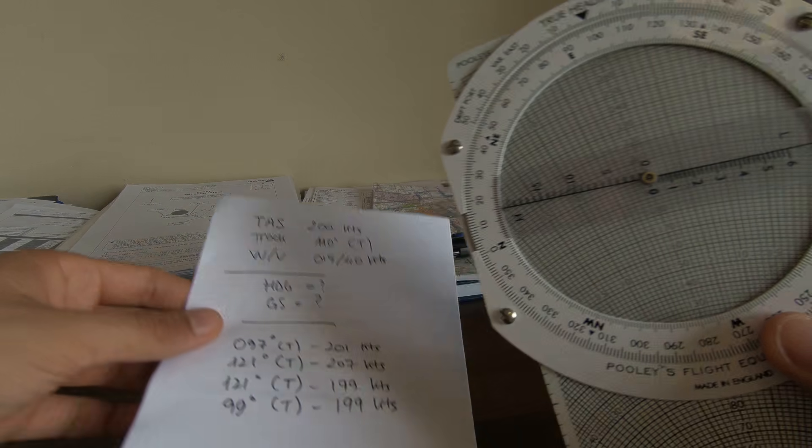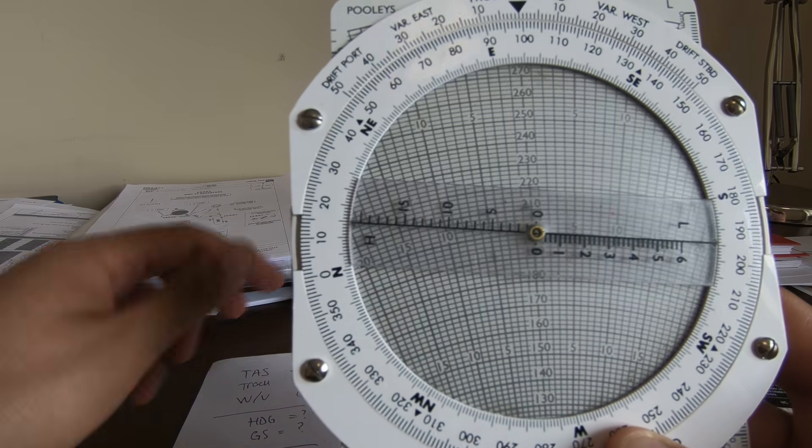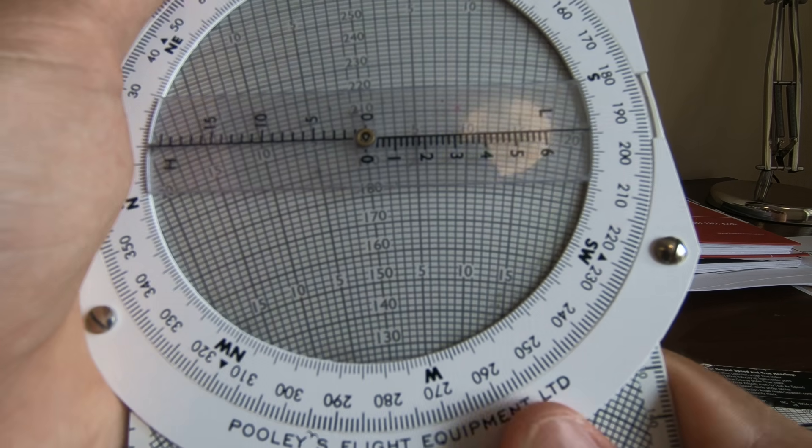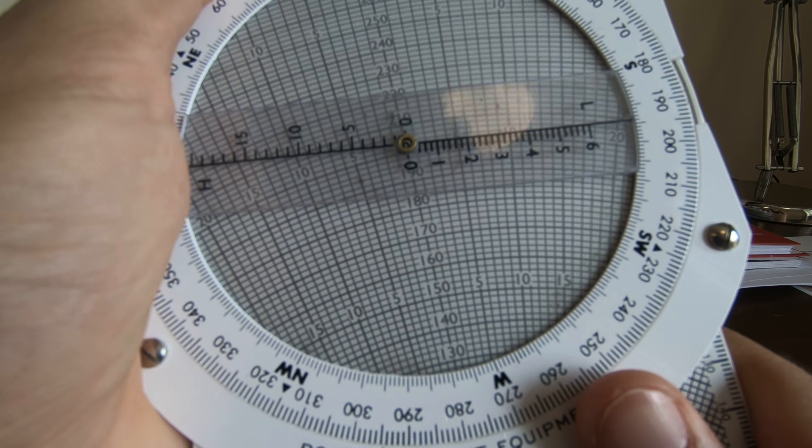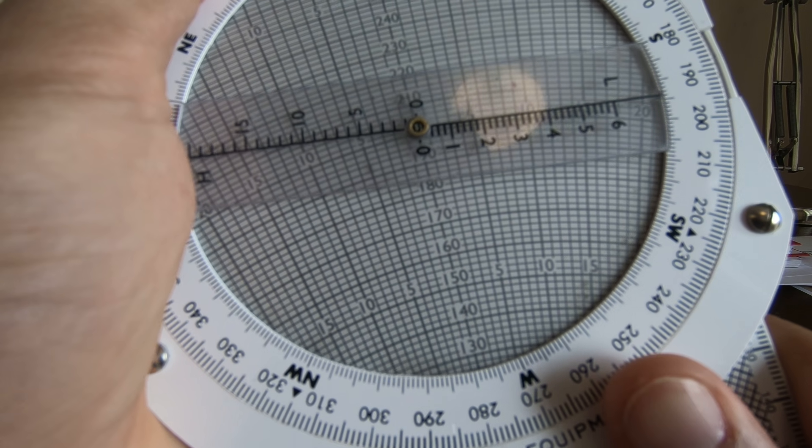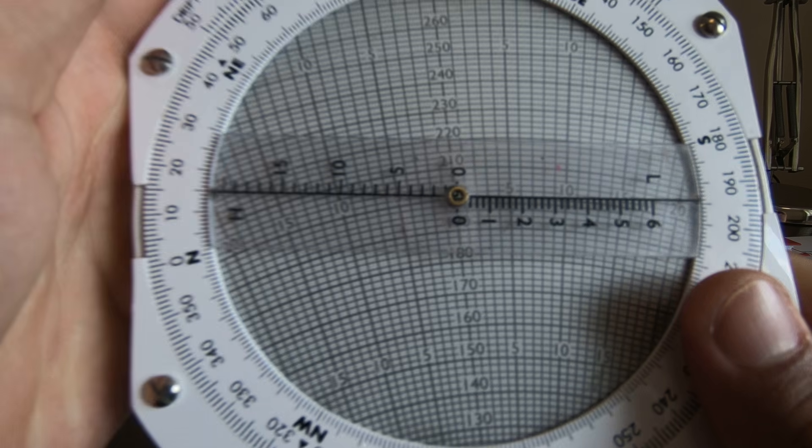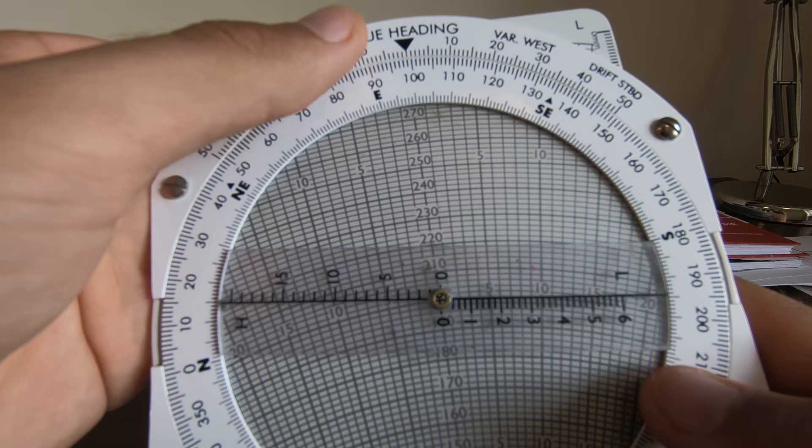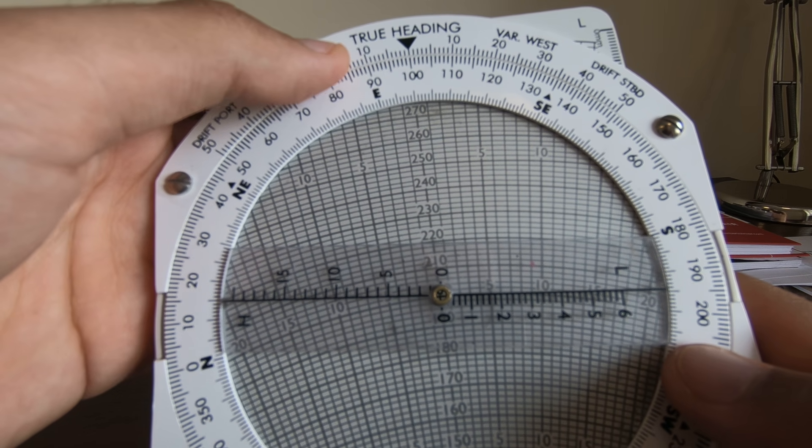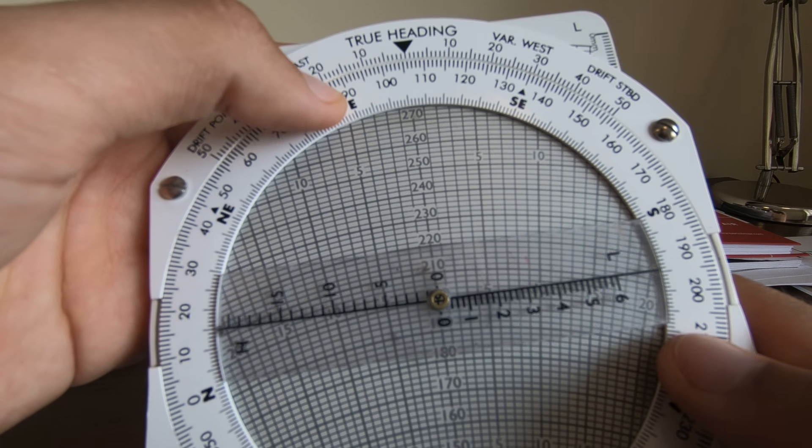With the computer, so true airspeed is 200. We always have to set the 200 in the middle, there we go, right in the middle. Then we have a track of 110, so we're going to put the track up here. But be careful, this is true heading. For the moment we just put the track because this is what we have. So after we put the track, we do the wind.